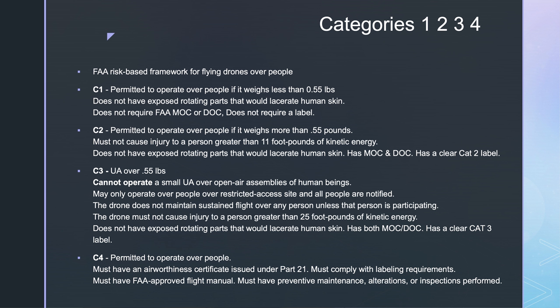Category four, permitted to operate over people. You must have an airworthiness certificate issued under part 21. You must comply with labeling requirements. You must have the FAA approved flight manual. You must have preventive maintenance alterations or inspections performed. Remember the variations between the four categories.